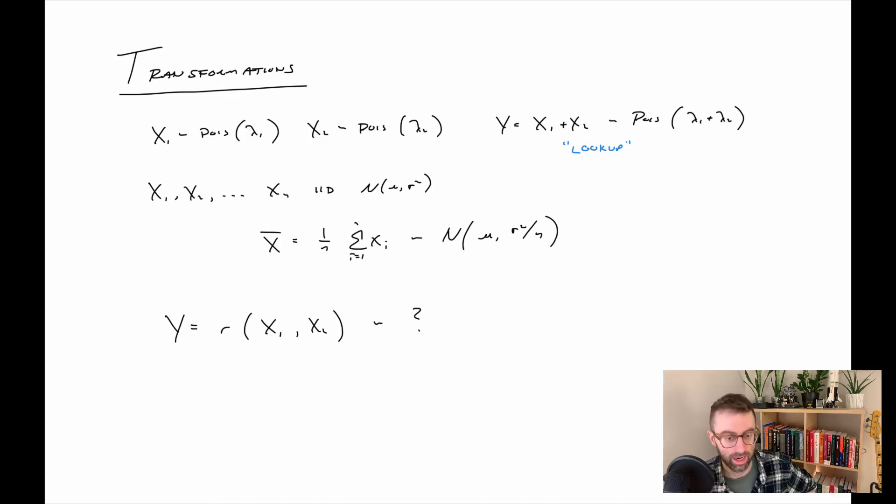This next one is an IID thing. So if we had X1 through Xn IID normal Mu Sigma squared, and I define a new random variable called X bar, which is the average of those random variables, turns out that that is also normal with the same mean and a slightly different variance. I would say this particular relationship you should memorize.